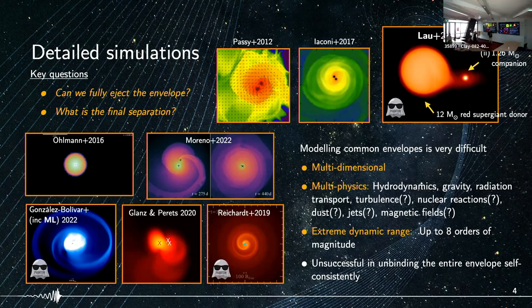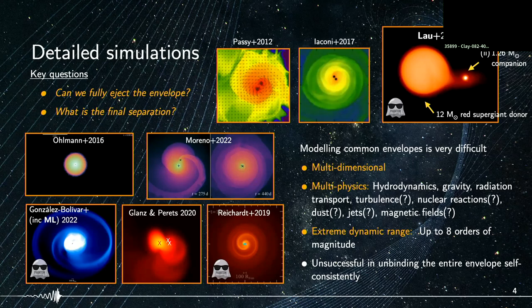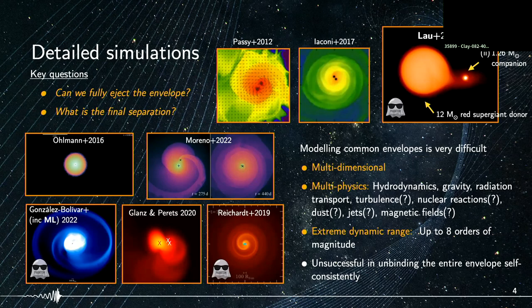In the top right corner is a snapshot from my own simulations published last year, involving a red supergiant donor of 12 solar masses in orbit with a companion of either 3 solar masses or 1.26 solar masses — two different cases simulated. The companion is represented by a non-accreting sink particle in PHANTOM.